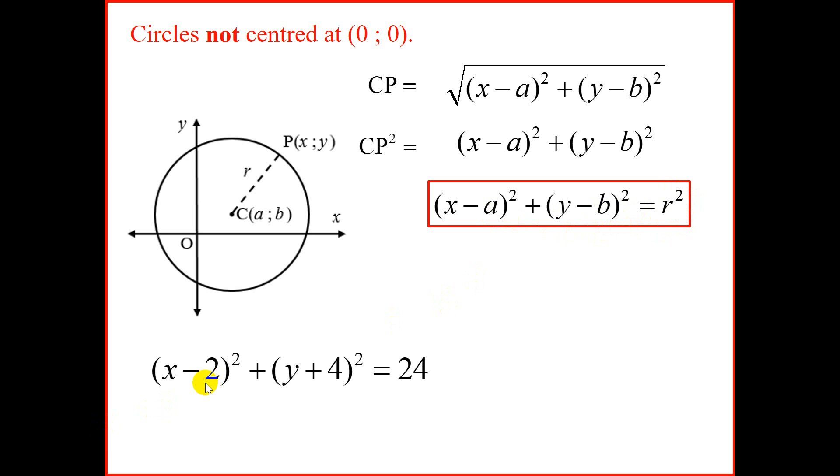So let's take our first example on these types of circles. If we want to find the center, all we have to do is change the sign, which will give us a positive 2, change the sign, negative 4. And our radius will be the square root of 24. And we can simplify that to 2√6. Or you could use a calculator to find the decimal equivalent.